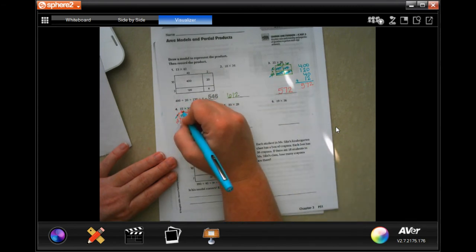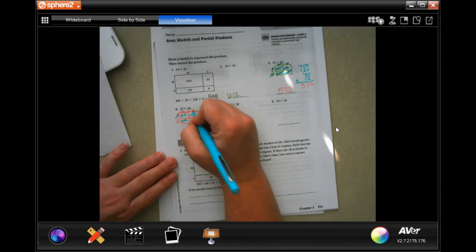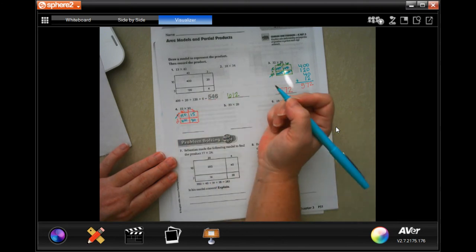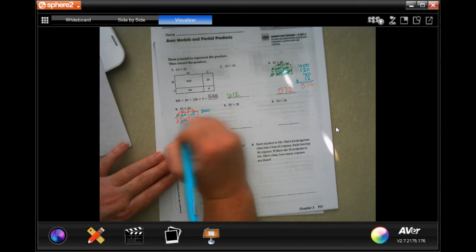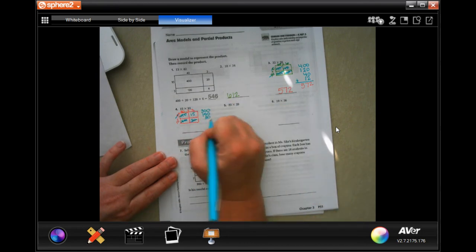10 times 30. Well, 1 times 3 is 3. And then I have the 1, 2 zeros. 10 times 3, 30. Now on the side here, I'm going to write 300. Done. 150. Done. 30. Done. And 15. Done.